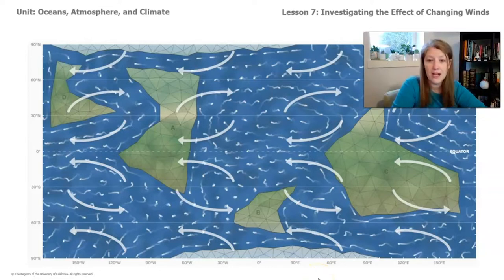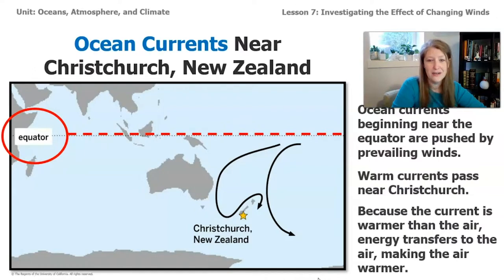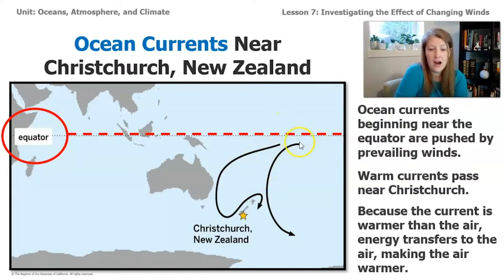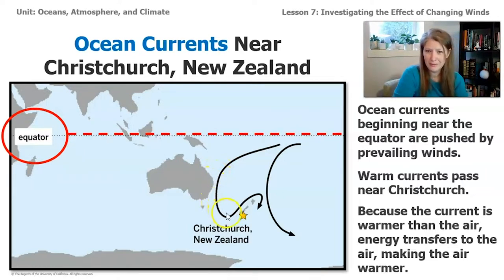We're trying to figure out why the air temperature in Christchurch, New Zealand is colder during El Niño years. What do we know about the ocean currents that form near Christchurch, New Zealand? Ocean currents beginning near the equator are pushed by the prevailing winds. As they're pushed, they run into Australia and then seem to turn completely around, which is unusual, and then go past Christchurch. So what could be causing this?